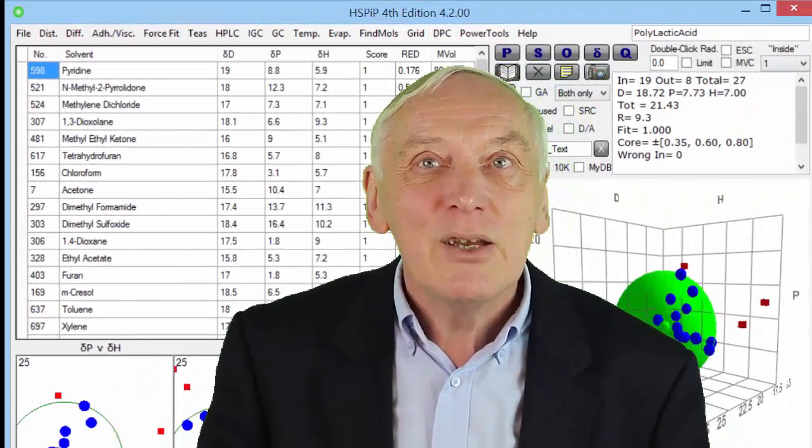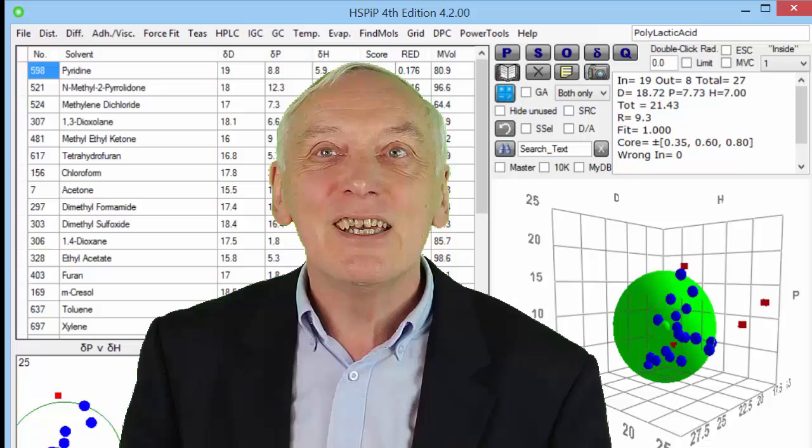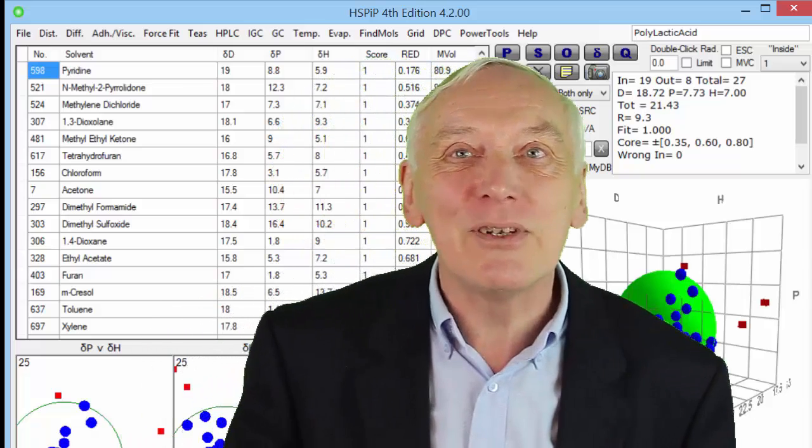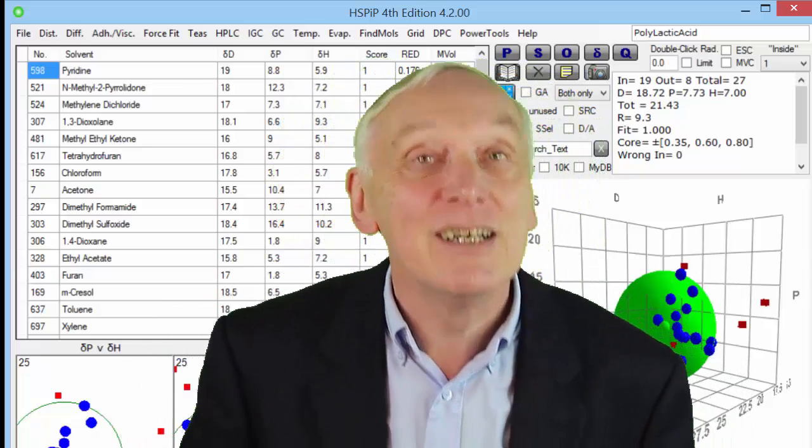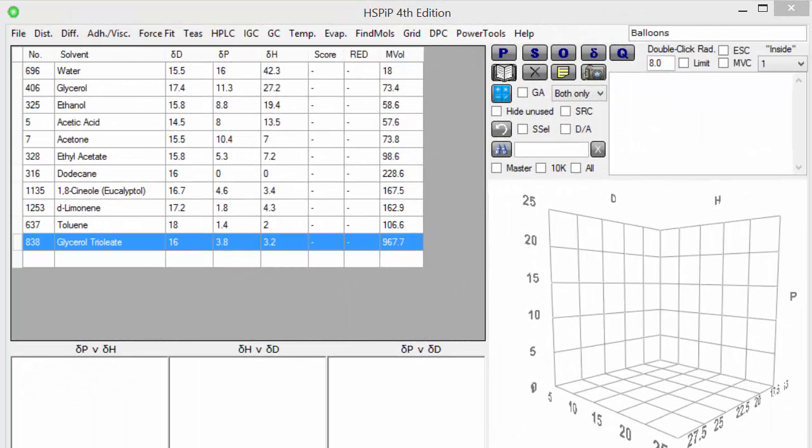In this clip we use a deliberately amusing technique for measuring the Hansen solubility parameters of polyisoprene rubber, also known as balloons. Even the best live science demo can go wrong in many ways and as you will see in a moment my demo definitely had some issues, but it was good fun doing it and it makes a serious point. So let's watch my live determination of the HSP of polyisoprene and then we'll discuss the results when we finish the video.